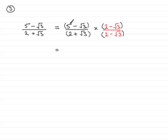So we have 5 times 2, which is 10. And then 5 times minus root 3, which is minus 5 root 3. Then minus root 3 times 2 is minus 2 root 3.